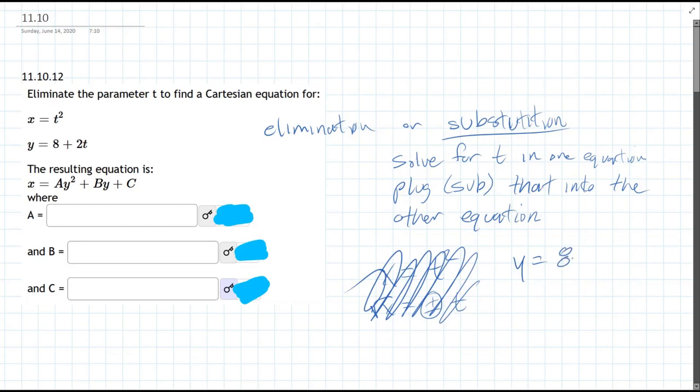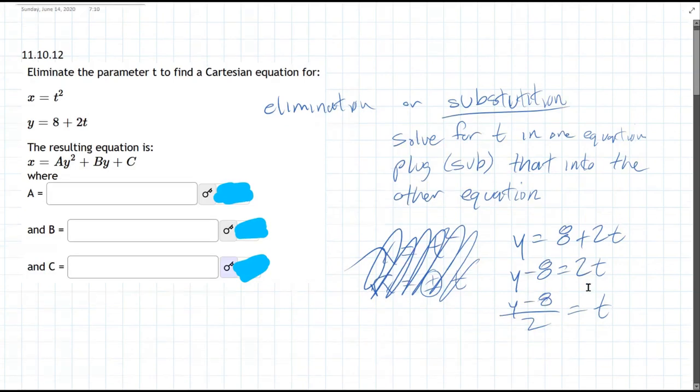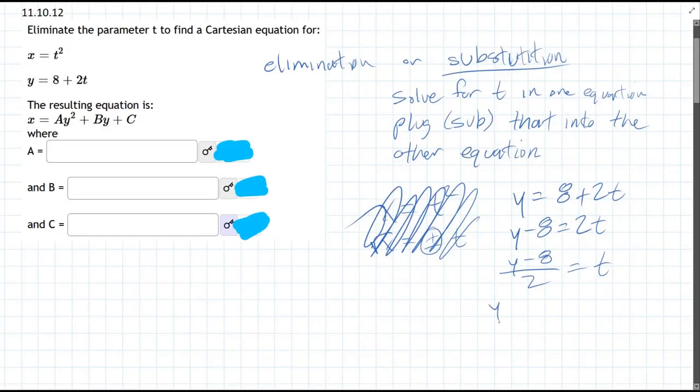y is 8 plus 2t. We're gonna subtract 8 first. So y minus 8 equals 2t and then divide by 2. And we can leave it in this form or we can write it as y over 2 minus 8 over 2 equals t. So that's y over 2 minus 4 equals t.